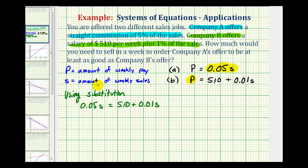If we multiply the left side by 100, we would have 5S. If we multiply the right side by 100, we would have 51,000 plus, if we multiply this by 100, we move the decimal point to the right two places, we would just have 1S or S.